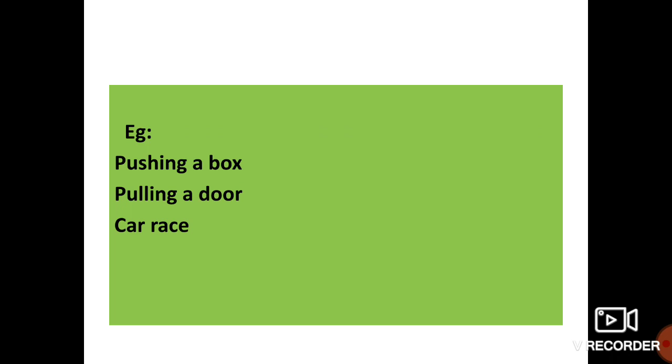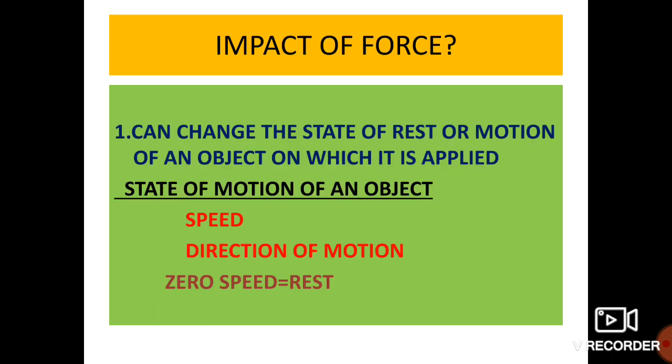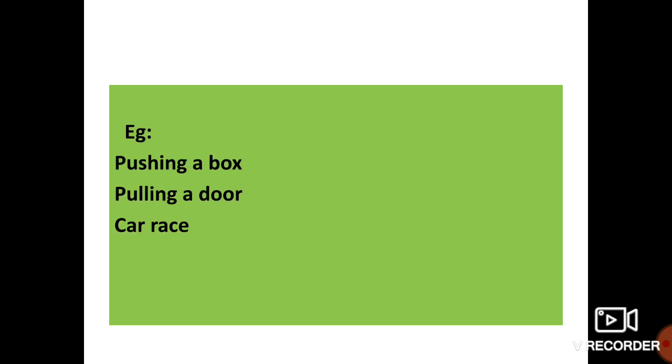Examples include pushing a box, pulling a door, and car races. In all these cases, the object is first at rest. Before pushing a box, the box is at rest. When we apply force, the state of motion changes — we can move that box from its state of rest.